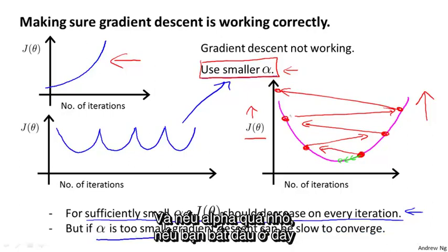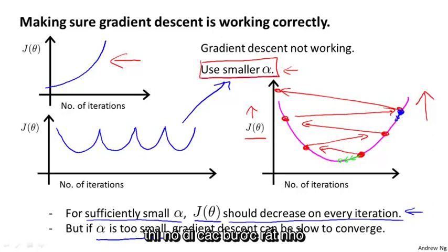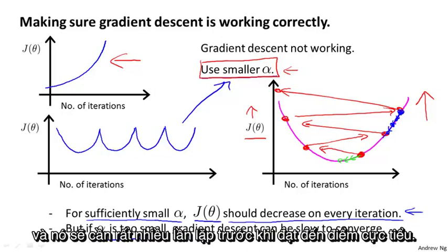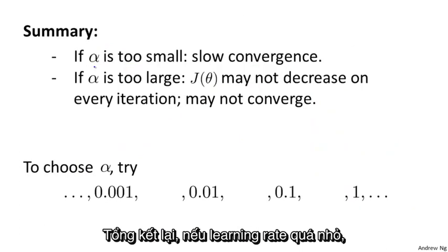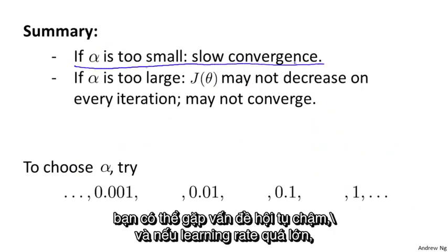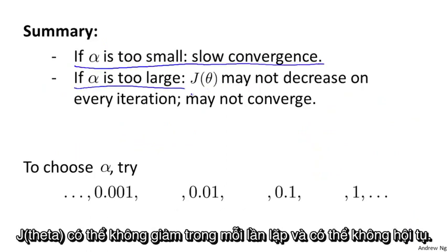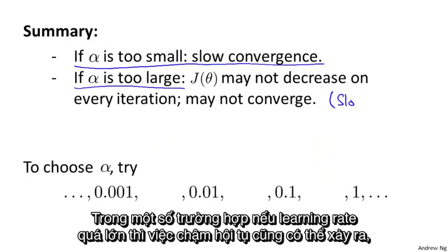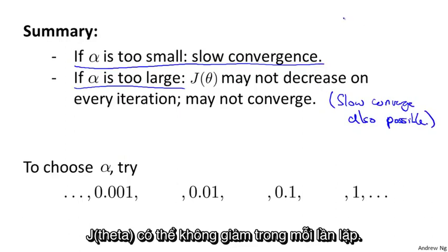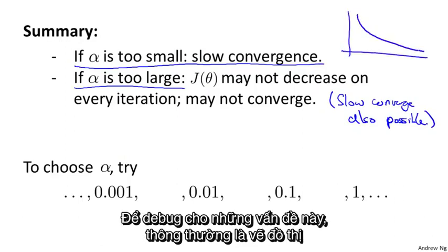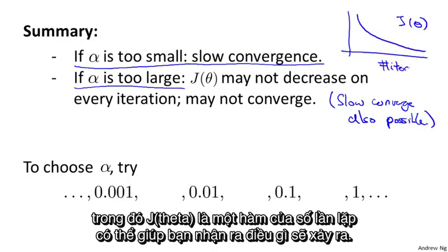If alpha were too small, you might end up taking minuscule baby steps and taking a lot of iterations before you finally get to the minimum. So if alpha is too small, gradient descent can make very slow progress and be slow to converge. To summarize: if the learning rate is too small, you can have a slow convergence problem. If the learning rate is too large, J(θ) may not decrease on every iteration and may not even converge. In some cases, if the learning rate is too large, slow convergence is also possible, but the more common problem is that J(θ) may not decrease on every iteration. Plotting J(θ) as a function of the number of iterations can help you figure out what's going on.